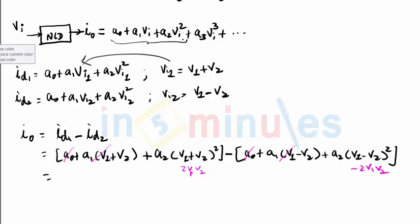So finally my expression will become 2 A1 V2 because A1 V2 gets added plus 4 A2 V1 V2. A2 was a coefficient which will remain there. So that's my output current IO.